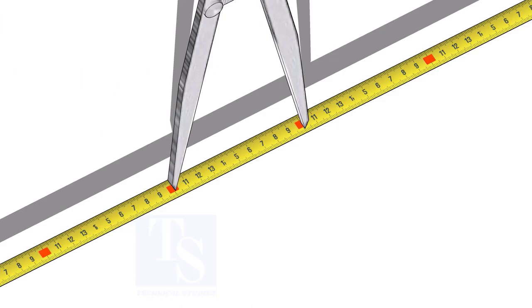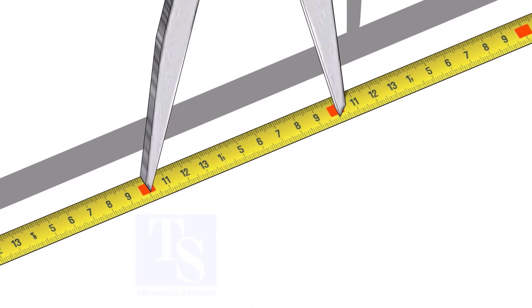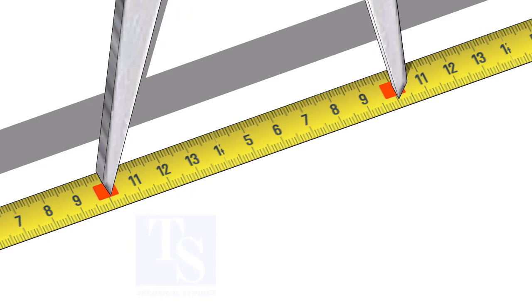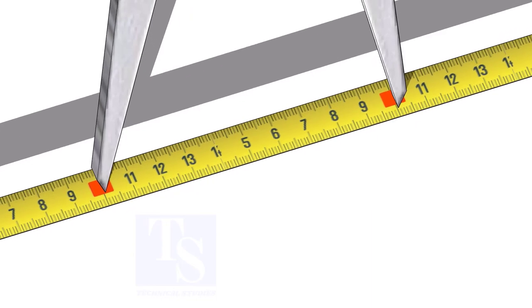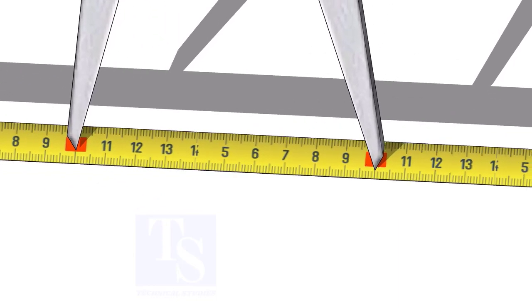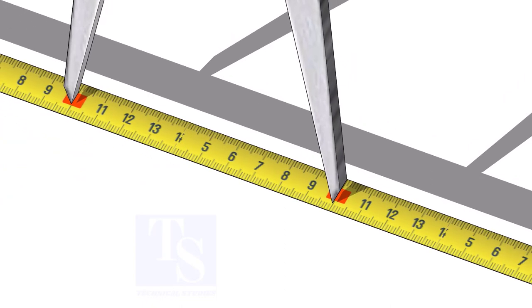Adjust the divider to 100 millimeters. Remember, this method is suitable for small diameter cones only. For large cones, you need to follow the cord length marking method.